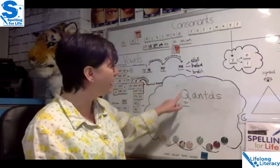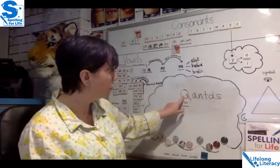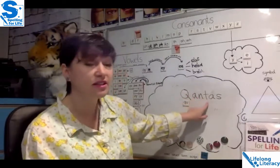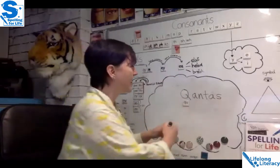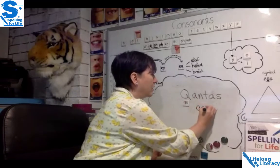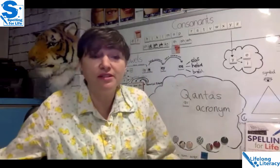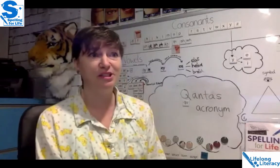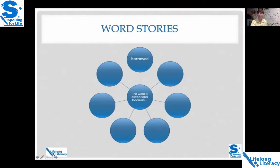We took all those words, took the first letter of each, and made a new word. That is an acronym — A-C-R-O-N-Y-M — a new word made from the first letter of a bunch of words. Acronyms don't follow the same spelling rules; they were never part of that standardization spelling process. So that's your second word story: acronyms.